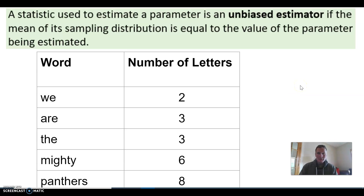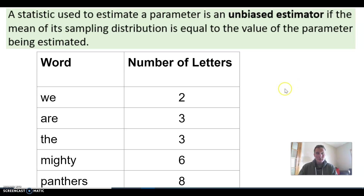We can illustrate this if we keep our population small. We have a population of five words — 'We Are The Mighty Panthers' — and we're interested in the number of letters, the length of each word. We are sampling two words, so we'll have a sample size of two words randomly selected.